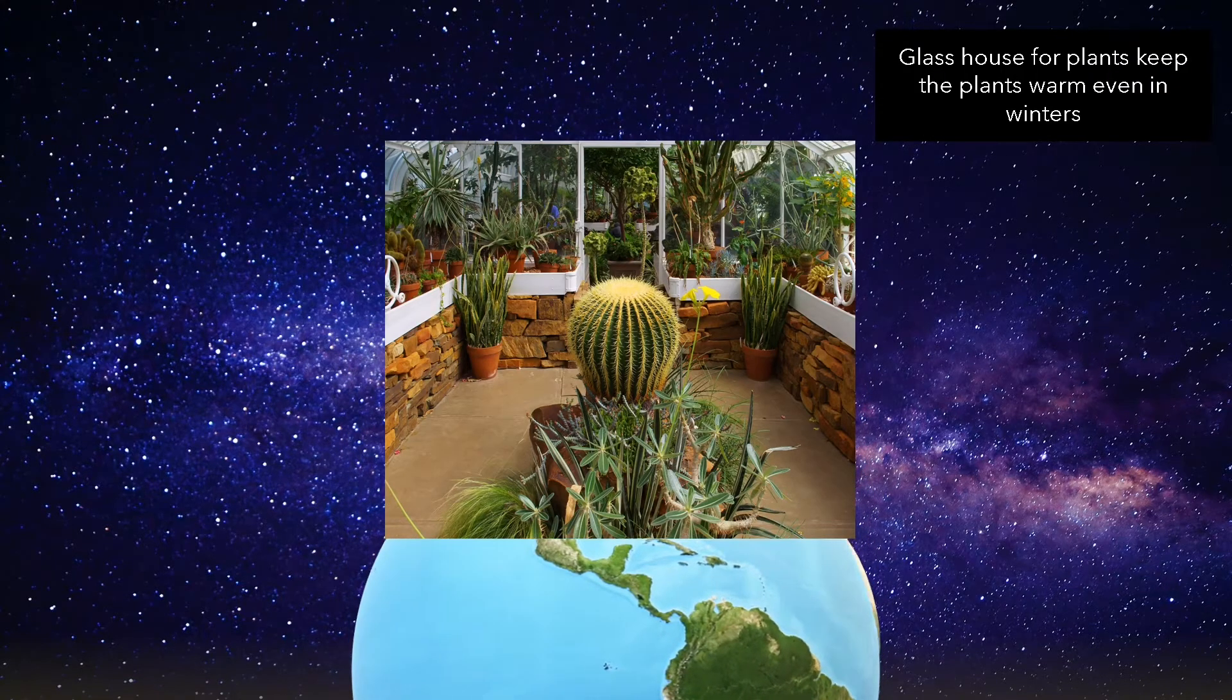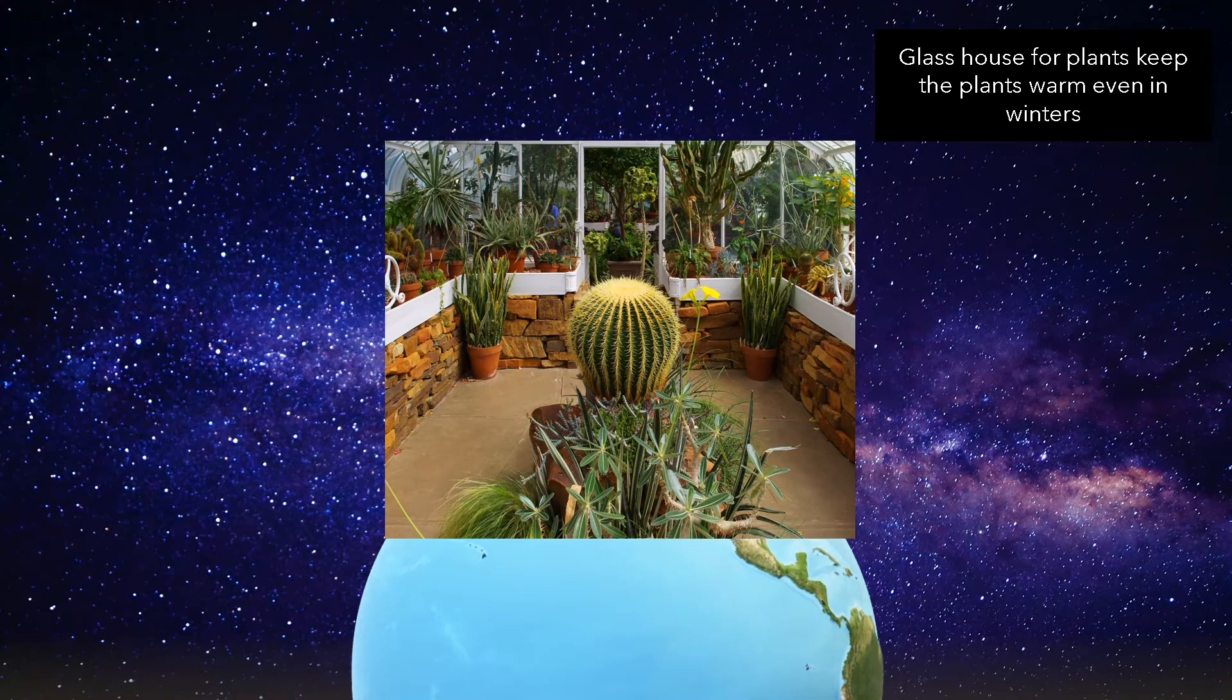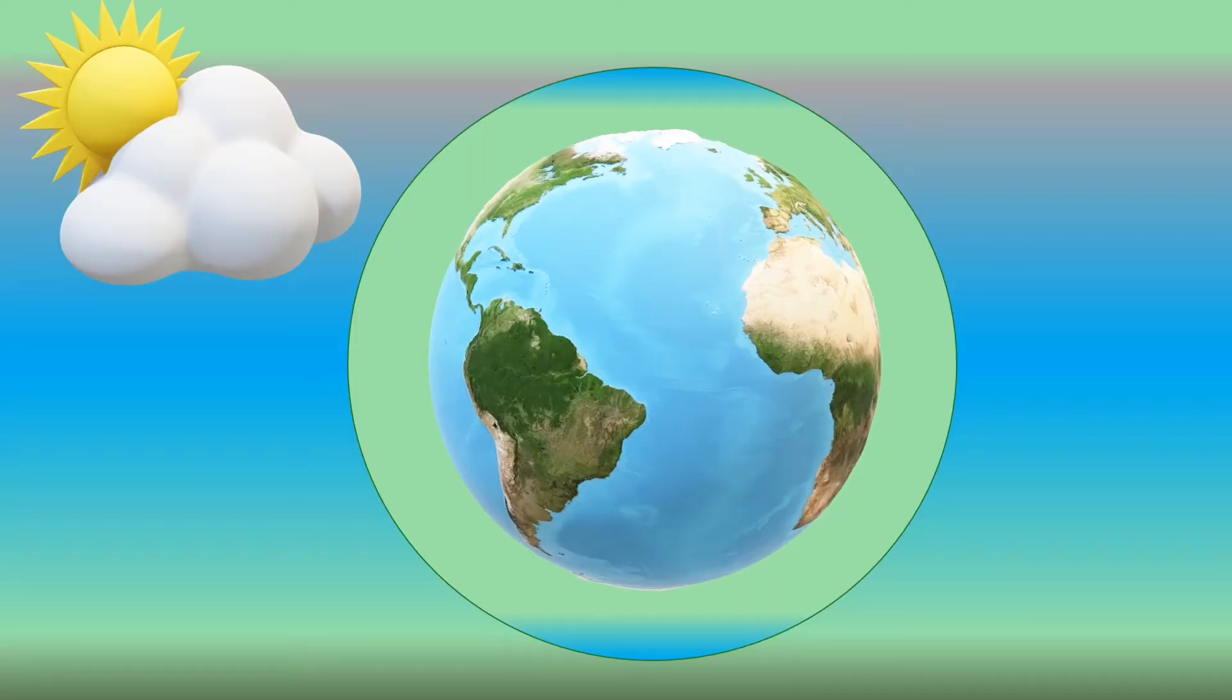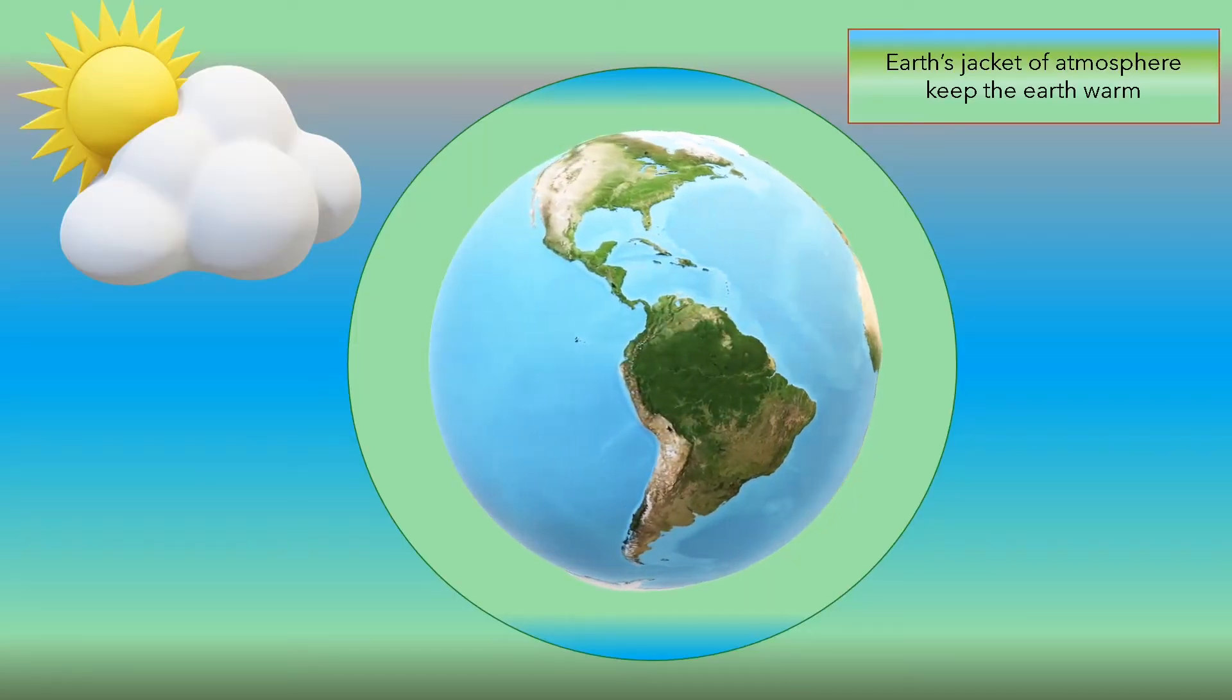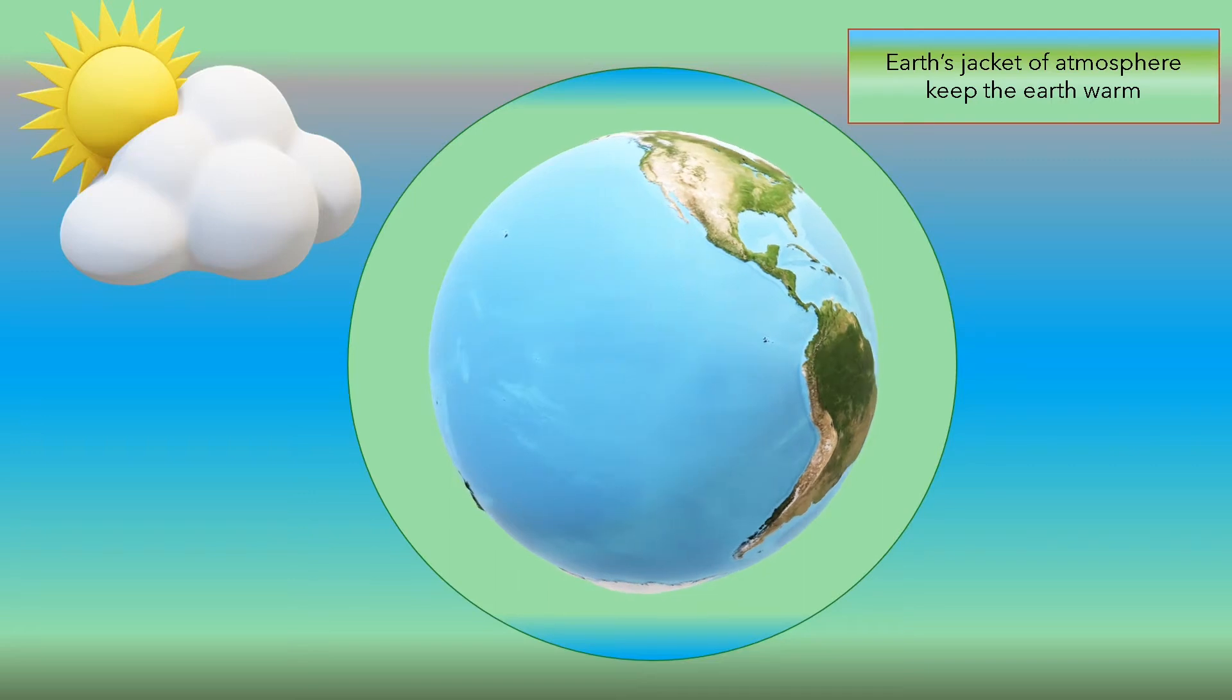We all know about the glass house right? Glass house for plants keep the plants warm even in winters. Earth's jacket of atmosphere keeps the Earth warm.